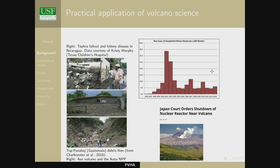That's a non-eruptive event — definitely a consequence of volcanic activity, but not eruptive. In the upper right-hand panel, there's a histogram showing new cases of unexplained kidney disease per 1,000 agricultural workers in the area of Chinandega, Nicaragua. There's a rapid change in the frequency of these events, and the epidemiologist involved, Christy Murphy, thinks excess fatalities are probably about 1,000 people.